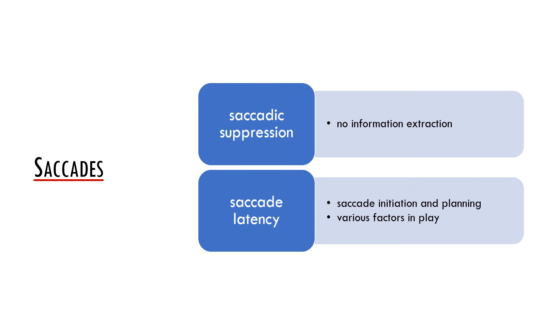We may say that the main function of a saccade is to bring a new part of text to the foveal region. Importantly, we do not extract information during saccades which is a phenomenon called saccadic suppression. However, we may process the already extracted information while doing a saccade.